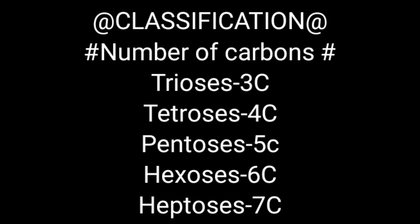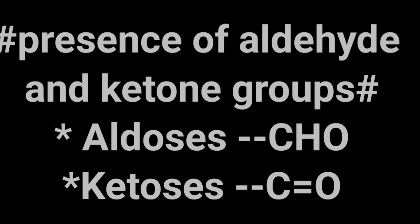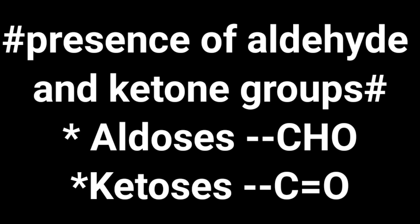Heptoses have seven carbons. Along with this classification by carbon number, there is one more type of classification depending upon the presence of aldehyde and ketone groups. If a monosaccharide contains an aldehyde group, it is called an aldose; if it contains a ketone group, it is called a ketose.